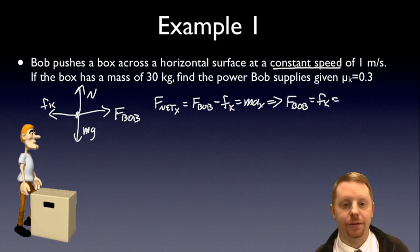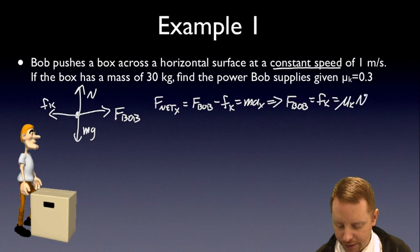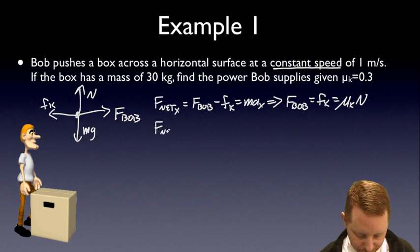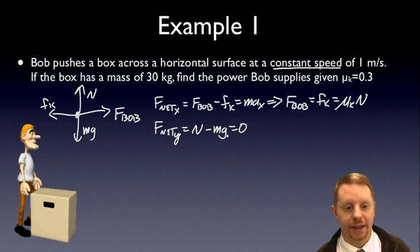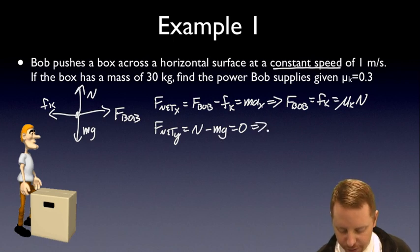And by the way, the force of friction, if you recall, is equal to the coefficient of friction times the normal force. Now let's use Newton's second law in the y direction. Net force in the y direction, we have the normal force pointing up minus mg, and that has to equal 0. Once again, the box isn't accelerating up or down through the surface. Therefore, we know the normal force must equal mg.